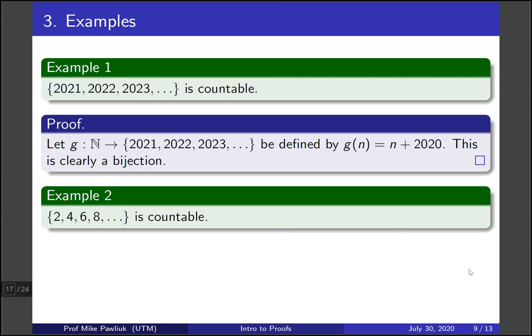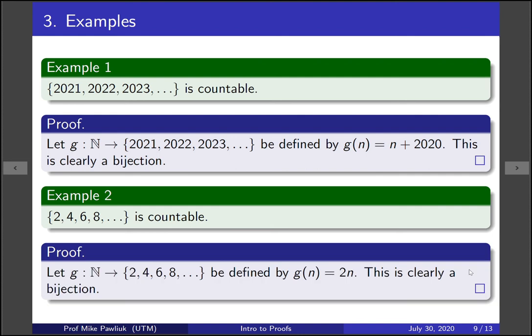Here's another example. Show that the set 2, 4, 6, 8, and all positive even integers is countable. This was also a Hilbert hotel problem, and we saw this earlier on in the cardinality section.